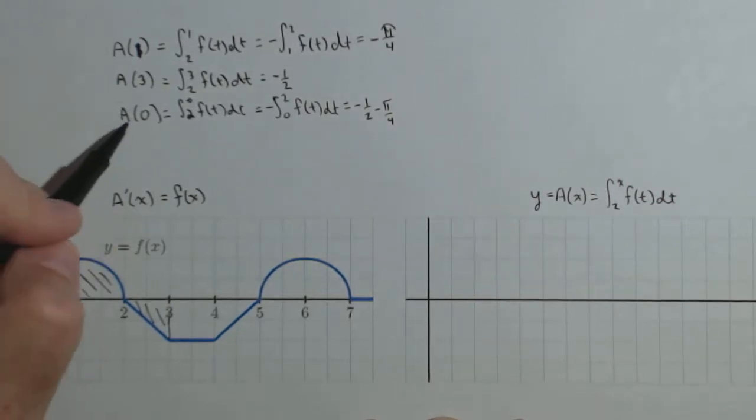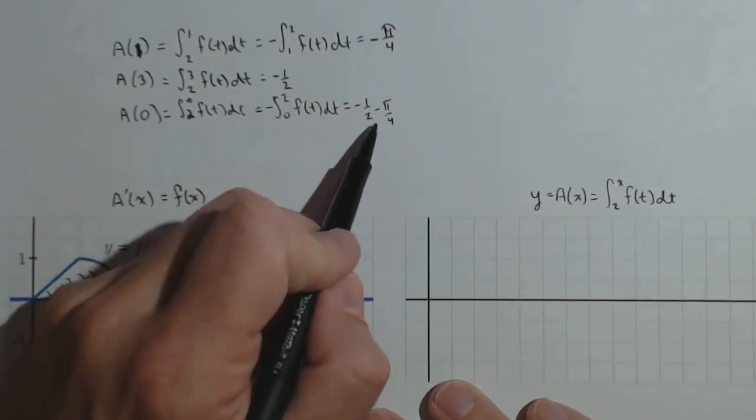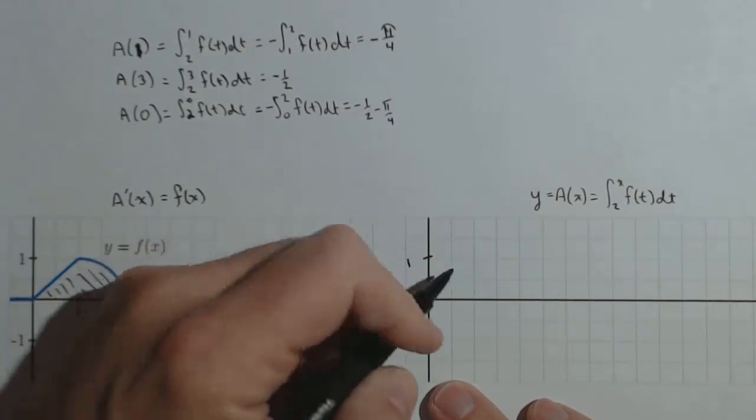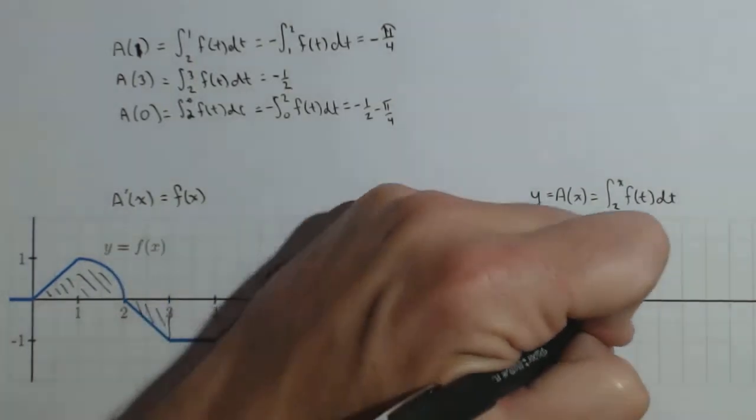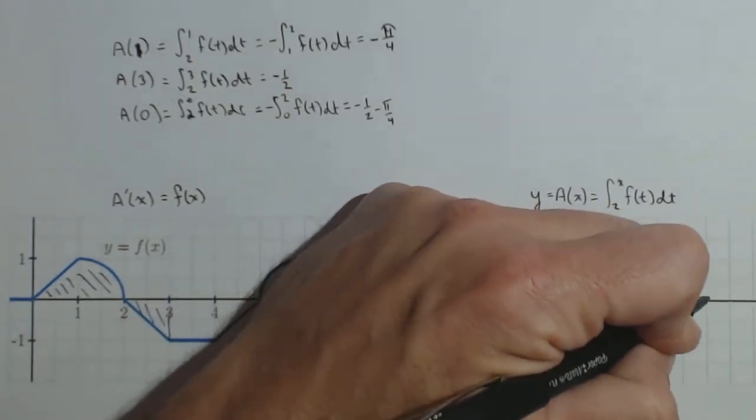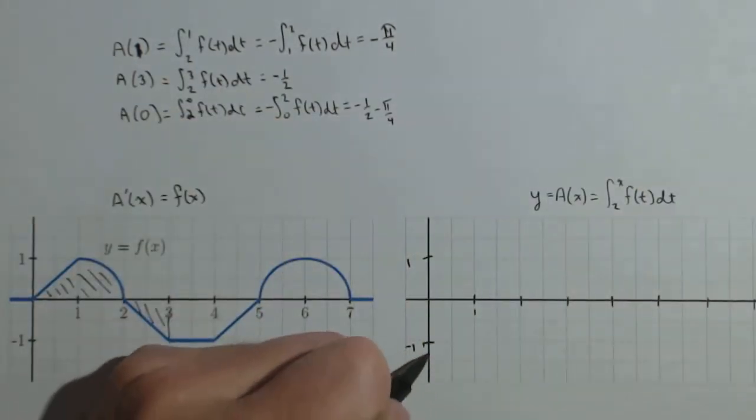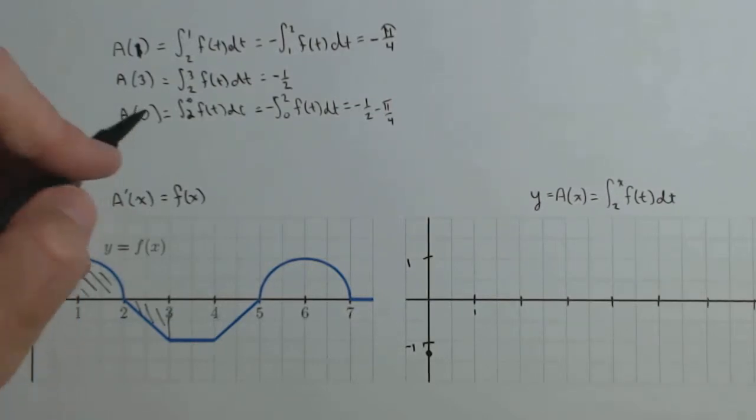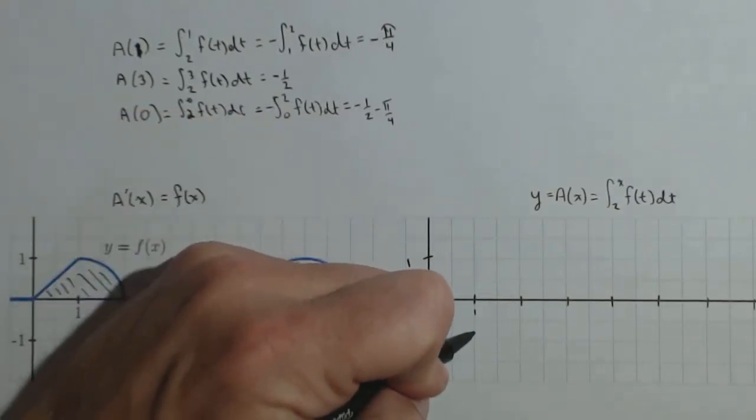And so let's start plotting some of these points. So at 0, we are going to be a little bit below negative 1. So let's make this negative 1 here and positive 1, and this will be 1, 2, 3, 4, 5, 6, 7 along our x-axis. So we're going to be somewhere down here. When we're at 0, it's around negative 1.25-ish. A(1) we've already found. A(1) is negative pi over 4, so it's going to be here.